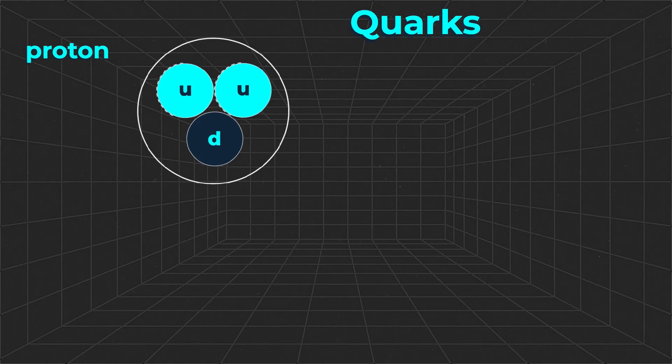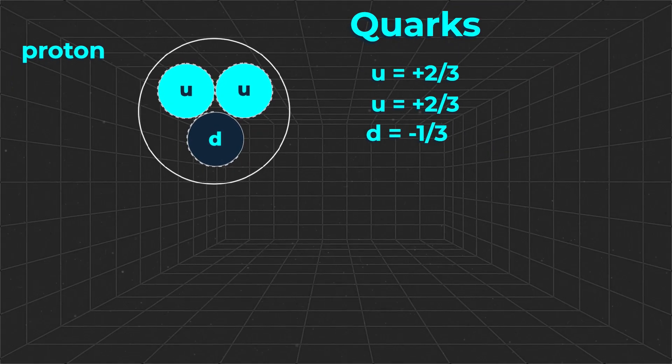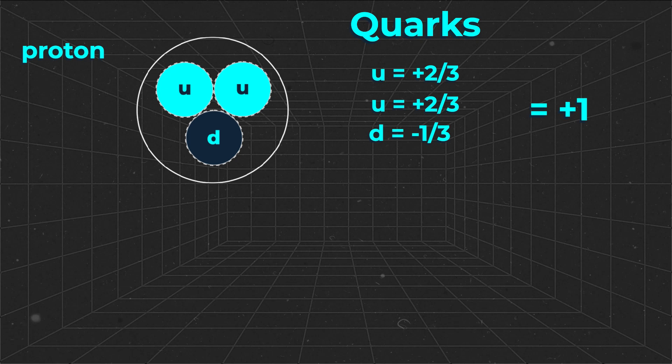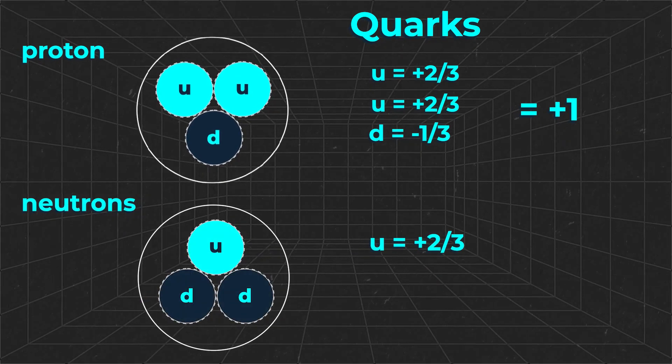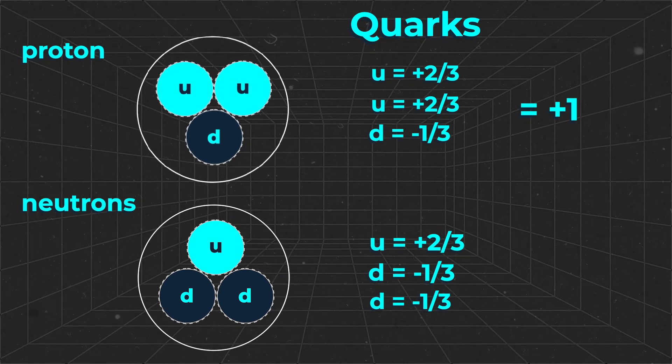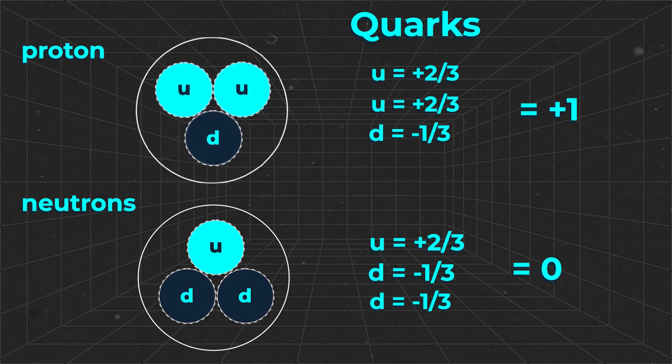Protons, two up quarks of two-thirds charge and one down quark of minus one-third charge, giving an overall charge of plus one. And neutrons, one up quark of two-thirds charge and two down quarks of minus one-third charge, giving an overall charge of zero.